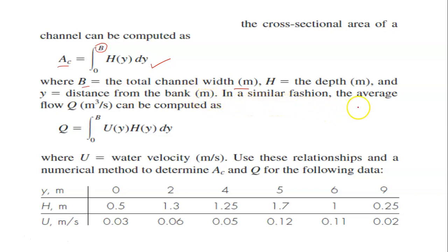In a similar fashion, the average flow Q can also be computed as this integral, in which U times H, where U in this equation is the water velocity. Use this relationship and a numerical method to determine AC and Q for the following data.